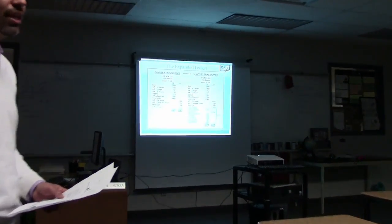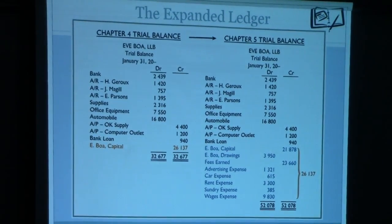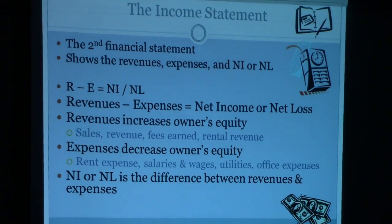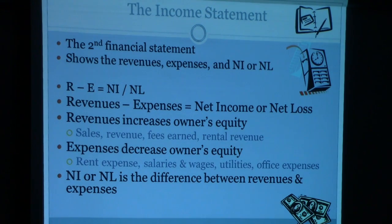We're going to continue our lesson on the expanded ledger, which is chapter five. The expanded ledger has now expanded to revenues, expenses, and drawings in the trial balance — these all come from the equity accounts. The income statement comes out of the expanded ledger and shows revenues and expenses. Revenue minus expenses equals net income or loss, which is the second most fundamental accounting equation.